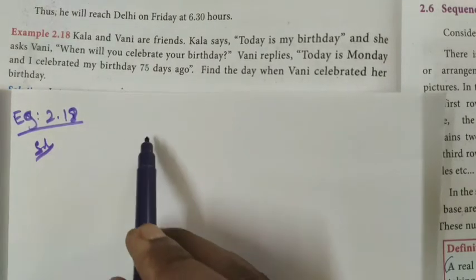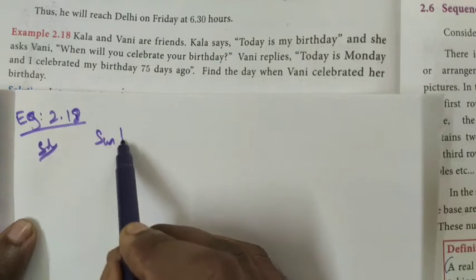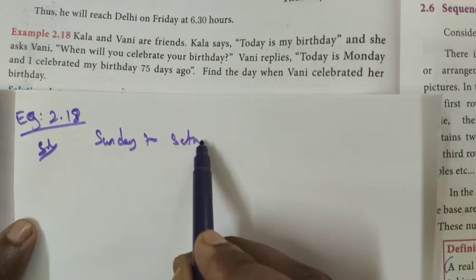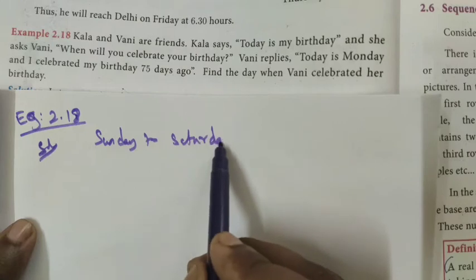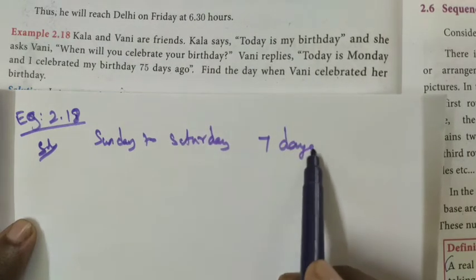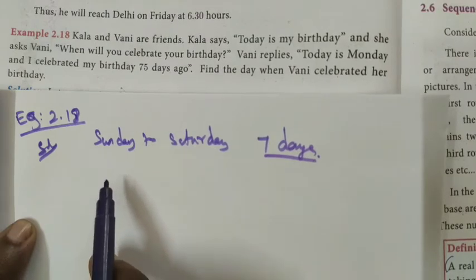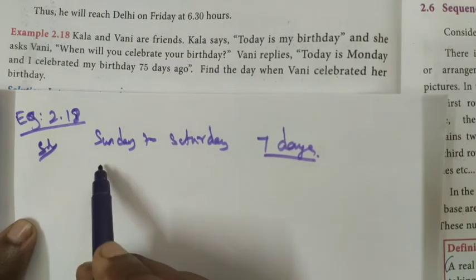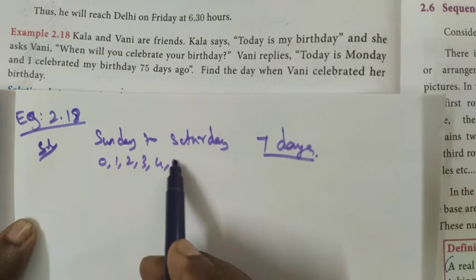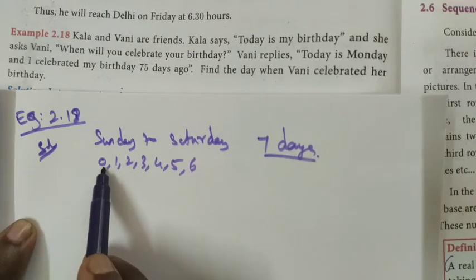We know that weekdays — how many days are in a week? Sunday to Saturday, totally 7 days. So we take 0 to 6: that is 0, 1, 2, 3, 4, 5, 6. These are the weekdays: Sunday, Monday, Tuesday, Wednesday, Thursday, Friday, Saturday.